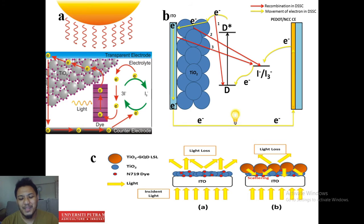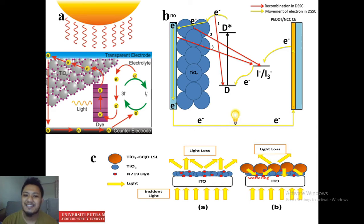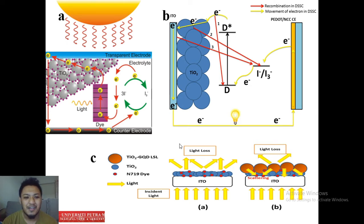Hello guys, assalamualaikum and good morning. Today I'm going to explain a little bit about the DSSC process — how it works, the recombination effect that occurs in the photo anode, and figure C which is about the light scattering effect. If you know the basic process of DSSC and the main problem at the photo anode, you can increase the power conversion efficiency.